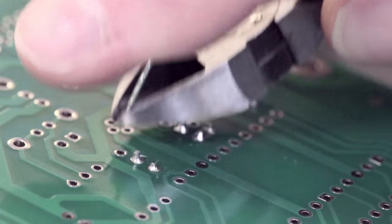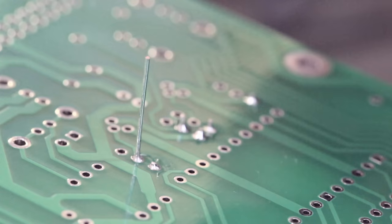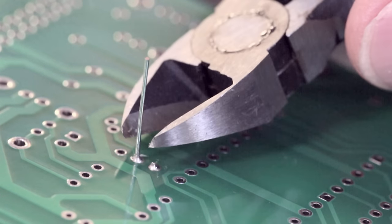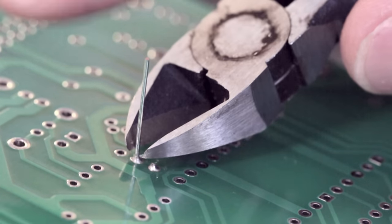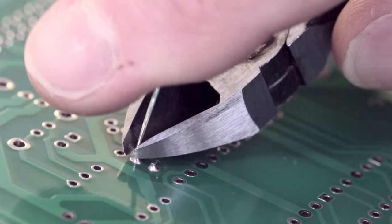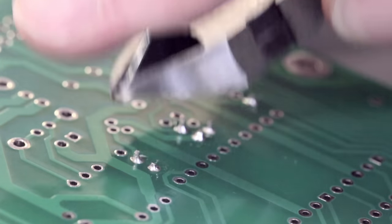Trim the leads just above the solder using some wire cutters. When you cut the wires be careful that the cut end is held captive so that it doesn't fly off. This can be done by putting your finger on the end when cutting.